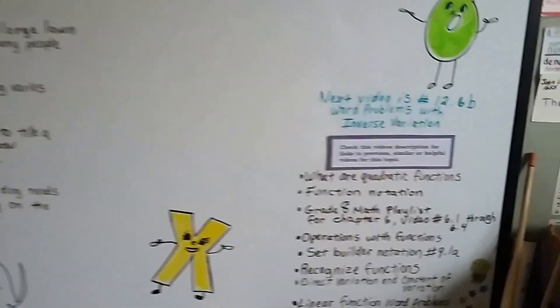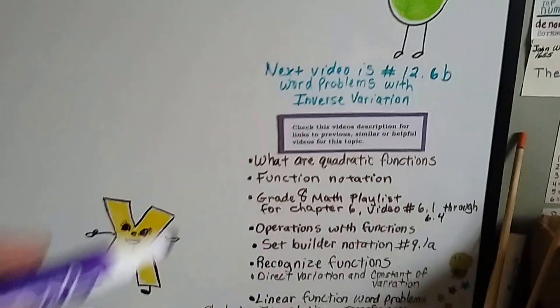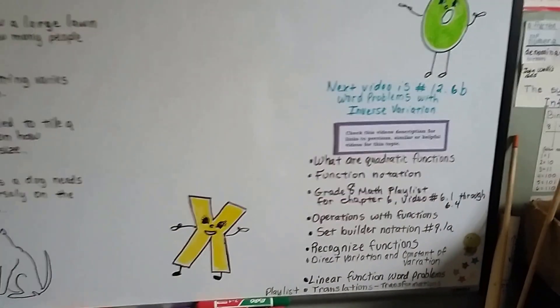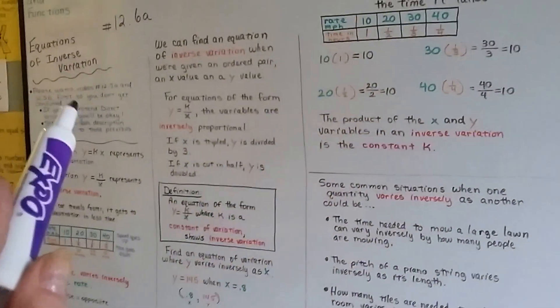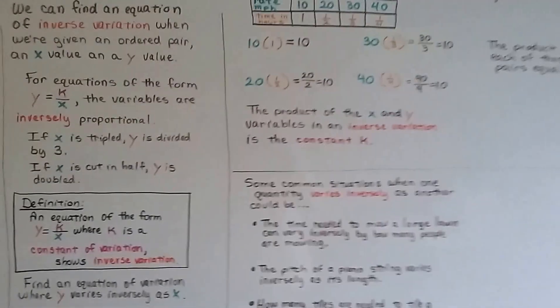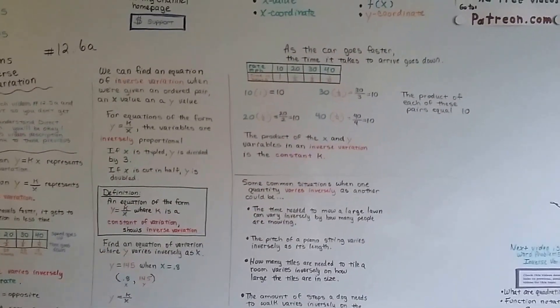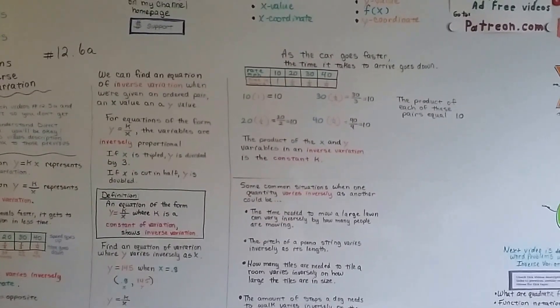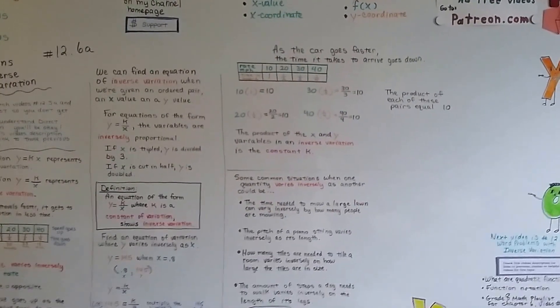Our next video is going to be 12.6b. I'm going to do word problems with inverse variation. And like always in this playlist, if you want to go back and watch any of the previous videos that we talked about, like if you do want to go back and watch 12.5a and 12.5b about direct variation, you can just click on the link in this description and go there. We talk about functions, we talk about how to recognize them and linear functions and quadratic functions and all the other function fun videos we've made for chapter 12.